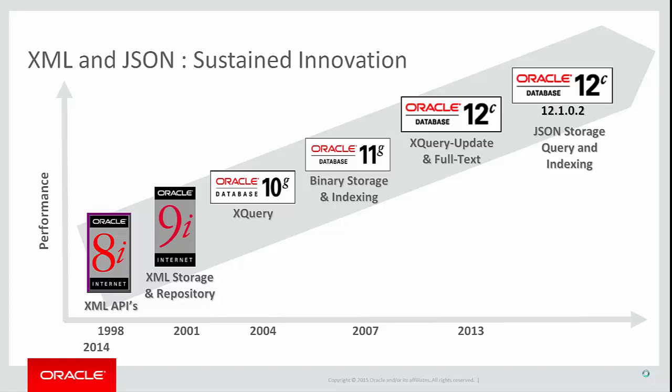Oracle 11g introduced new binary XML storage and indexing techniques, allowing the database to handle non-schema-based, semi-structured, and unstructured XML. The XQuery standard was extended to include XQuery Update and XQuery Full Text. With Oracle Database 12c, Oracle was the first major vendor to support these extensions. During this time, we began to see the rise of JSON as an alternative to XML. JSON's simple nature provides an easy way to get the benefits of document-based storage, and starting with Oracle Database 12c patch set 12.1.0.2.0, we have added support for JSON to the Oracle Database.